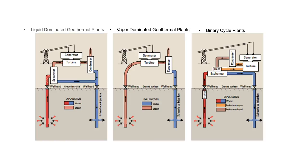In the third picture representing binary cycle plants, electricity is generated from a moderate-temperature hydrothermal system using a binary system. The geothermal water is used to boil a second fluid — isobutane in this example — whose vapor then drives the turbine generator. The waste water is injected back into the subsurface to help extend the useful life of the geothermal system.